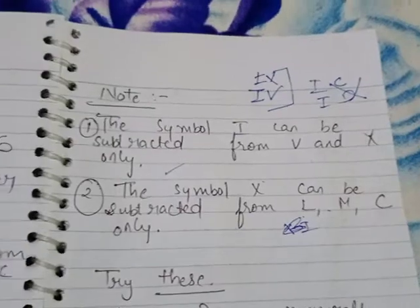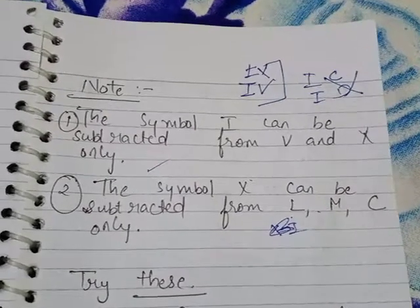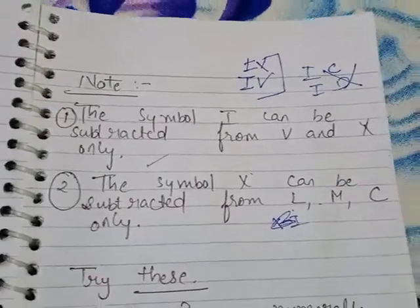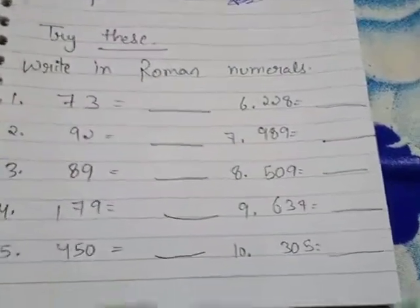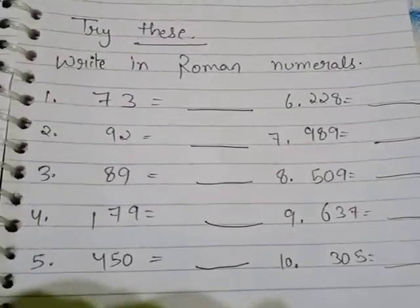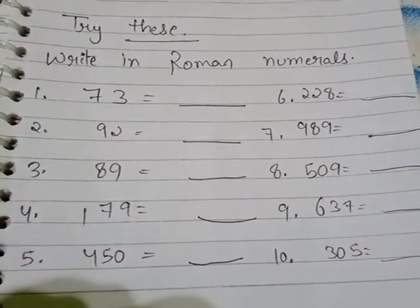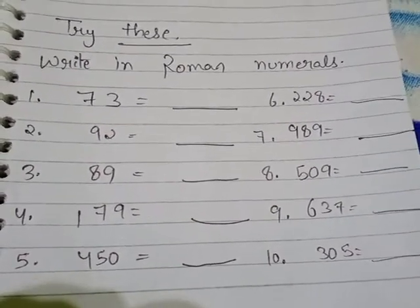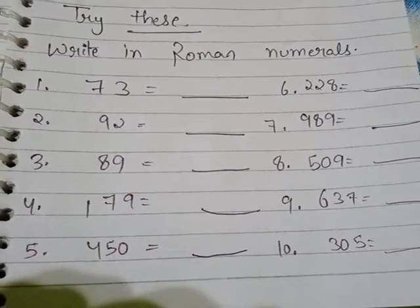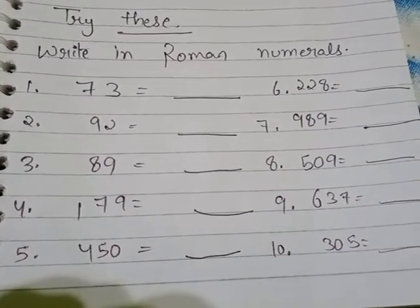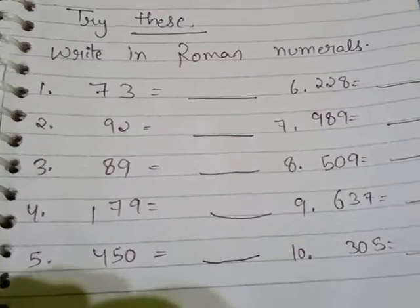Notes: I can only be subtracted from V and X. And X can only be subtracted from L, M, and C. So these Roman number notes you have to write in your copy. After noting down the rules, you have to solve all these Roman number exercises in your copy using those rules.